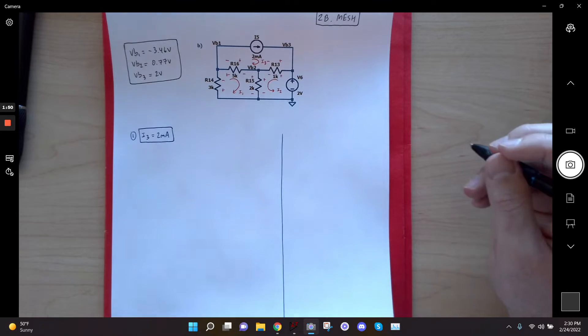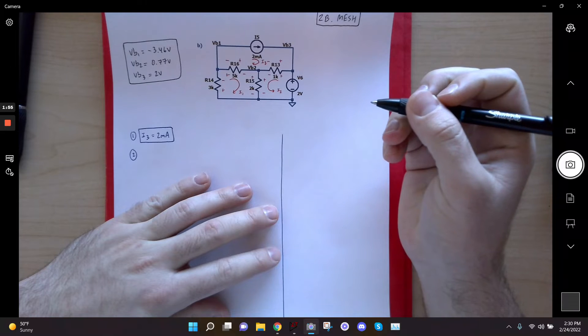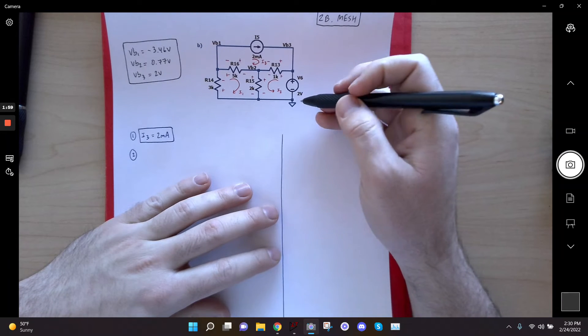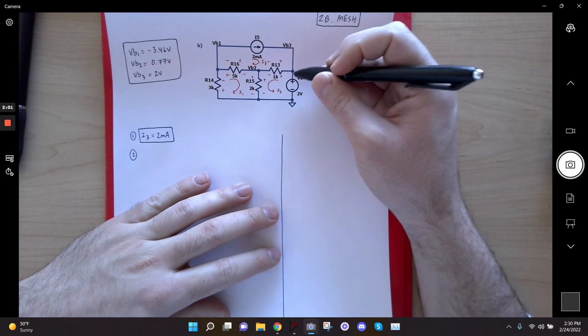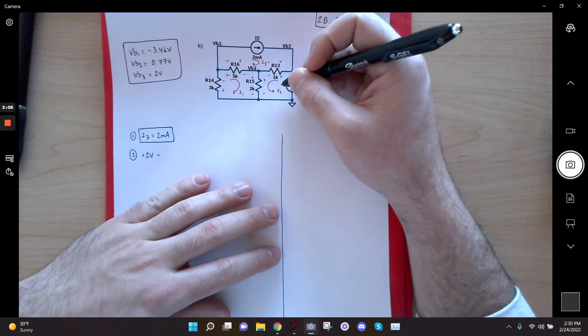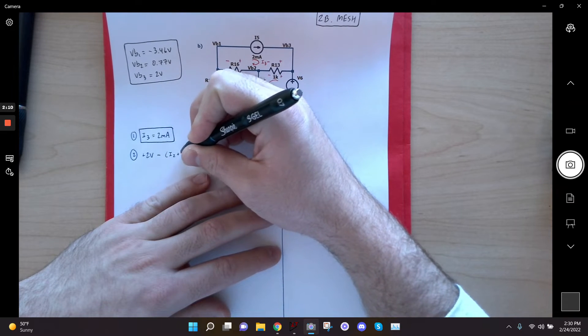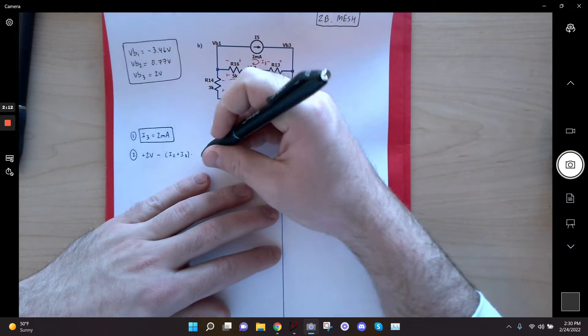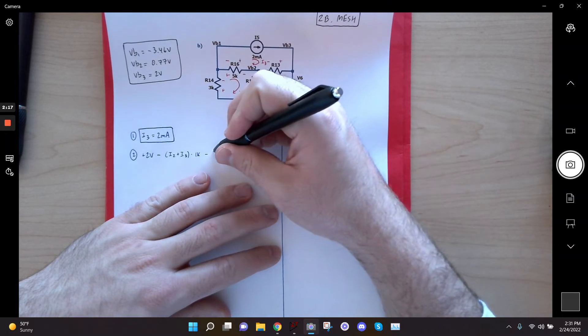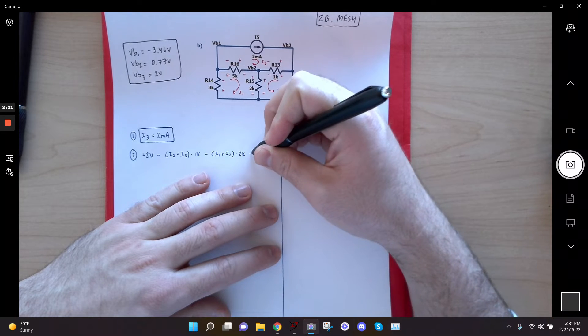Okay. Now that's going to go ahead and be my first equation, so I'll make my second equation now. And my second equation I'll derive from this loop, the second loop. And I will go ahead and go up 2 volts. And then I drop across this 1K, but I have I2 and I3 flowing in the same direction. So it's going to be minus an I2 plus I3 times 1K. And then when I drop across the 2K, I have I1 and I2 flowing in the same direction. So I can add those times 2K equals 0.